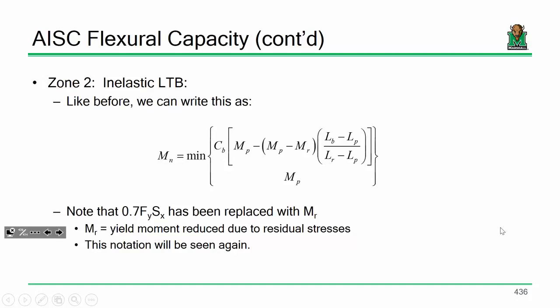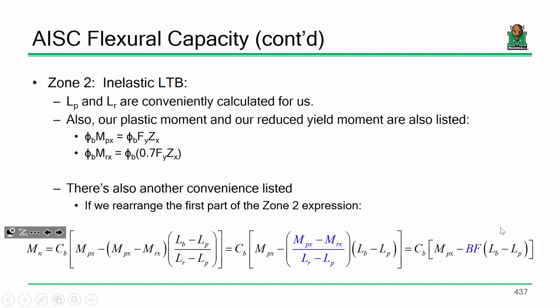We can simplify this equation a little bit. Number one, we can write it in that familiar format where any time that you have those two quantities and that less than or equal sign, it's basically just the code's way of stating that it's the minimum of those two quantities. Also, I've replaced the 0.7 F_y S_X with M_R.